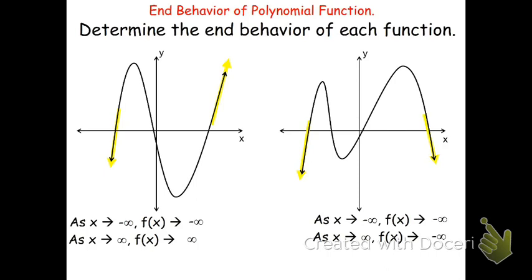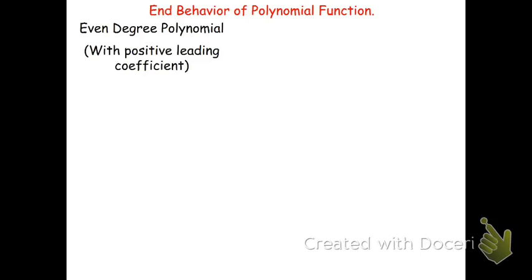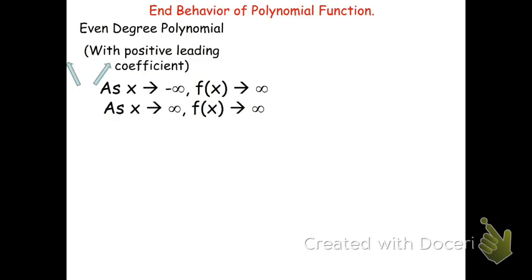Now let's look at some examples of how we can determine end behavior without having a graph — these are basically our rules. If we have an even degree polynomial where the leading coefficient is positive — meaning positive x squared, positive x to the fourth, positive x to the sixth — then the end behaviors are going to go in the same direction, and they're both going to go up. So as x goes to negative infinity, f of x approaches infinity, and as x approaches positive infinity, f of x will still approach positive infinity.